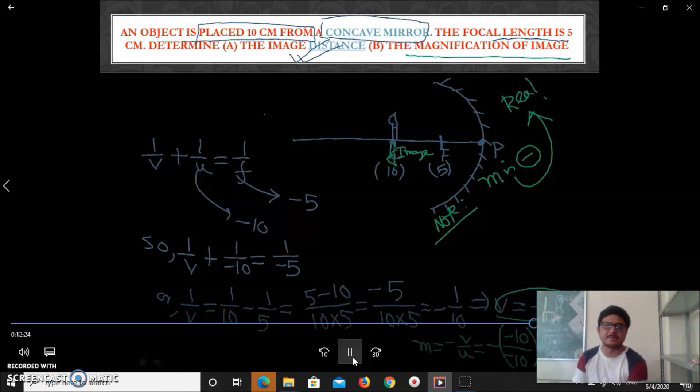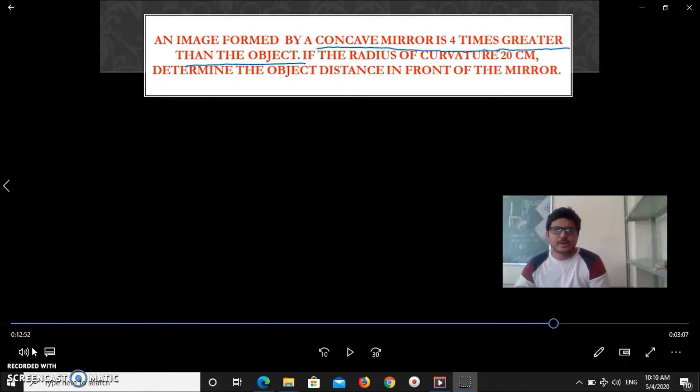So anywhere if image you construct. One more numerical problem I have given you. I will test you how much you have learned from my class. Here it is given that concave mirror makes four times greater than object, the image. It means m equal to 4. Radius of curvature is given. You have to find out distance from the mirror, object distance. Easy. Try to solve it and post me whatever is your answer. I am waiting for your answer.